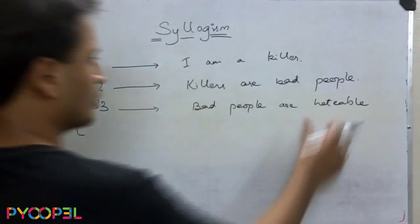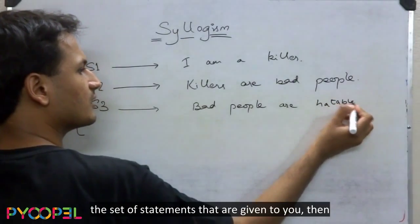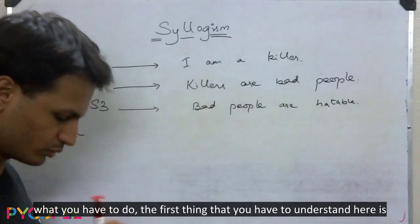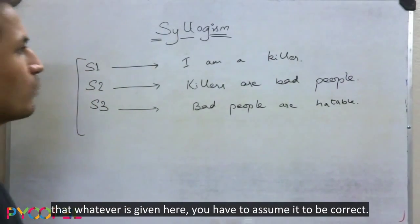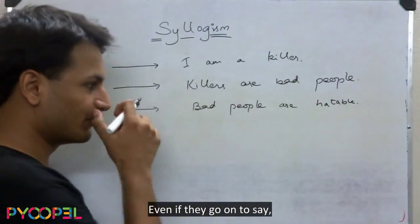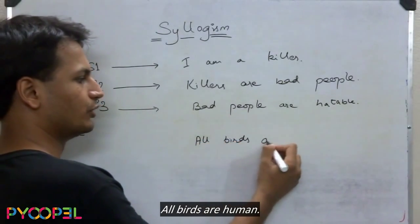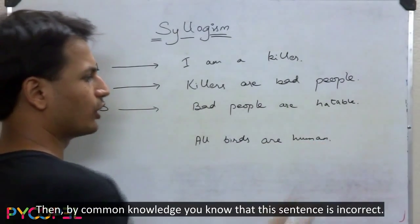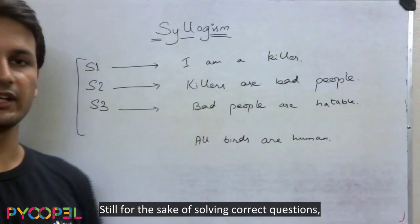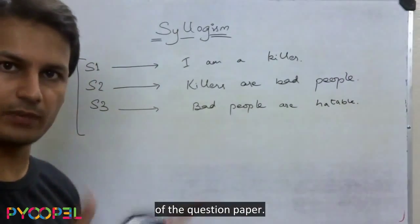Statement number three says: 'Bad people are hateable.' So if that is the set of statements given to you, the first thing you have to understand is that whatever is given here, you have to assume it to be correct. Even if they say 'All birds are human' — which you know by common knowledge is incorrect — for the sake of solving the question, you have to assume it is true within the purview of the question.